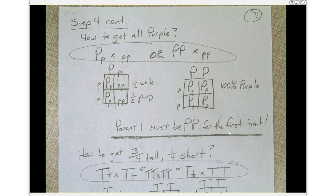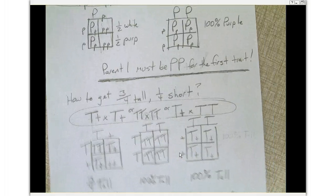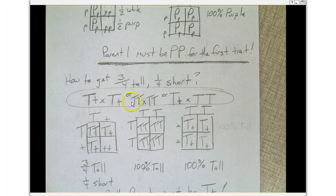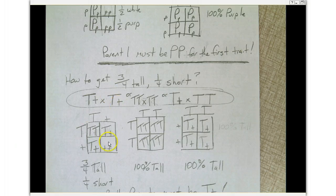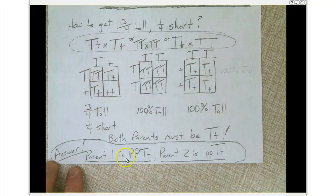How do we get three-fourths tall and one-fourth short? Big T big T crossed with big T big T gives all big T big T — no short at all. Big T little t crossed with big T big T also gives all tall. However, if parent one has big T little t and parent two also has big T little t, crossing those together gives three-fourths tall and one-fourth short. So parent one is big P big P, big T little t. Parent two is little p little p, big T little t. That's how you answer this question.